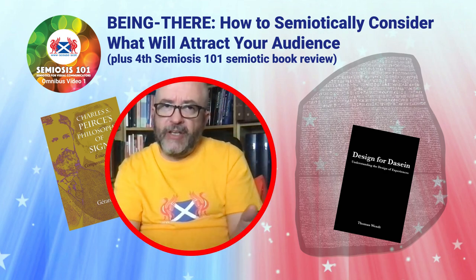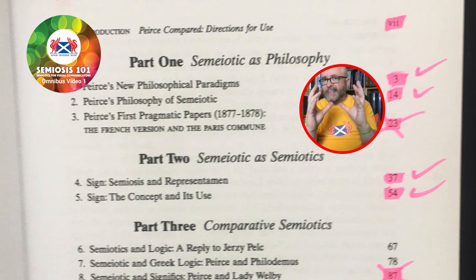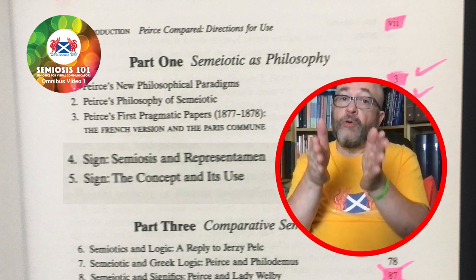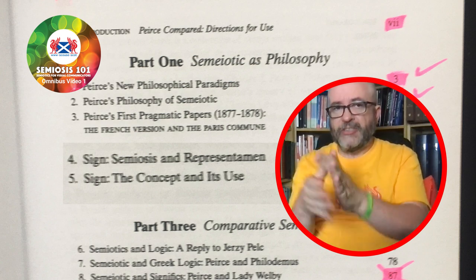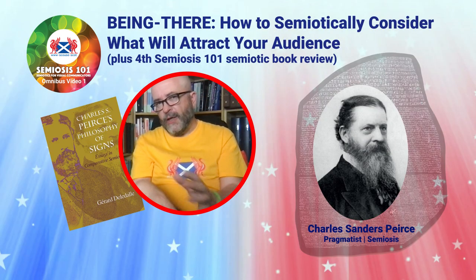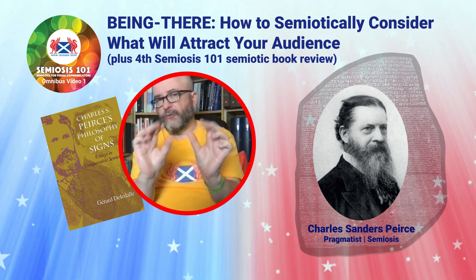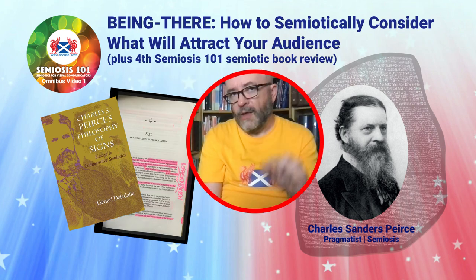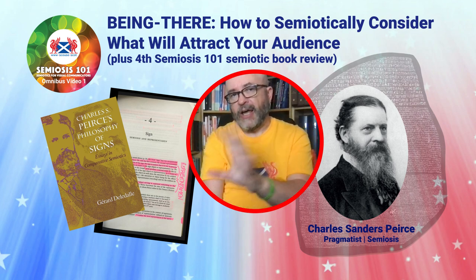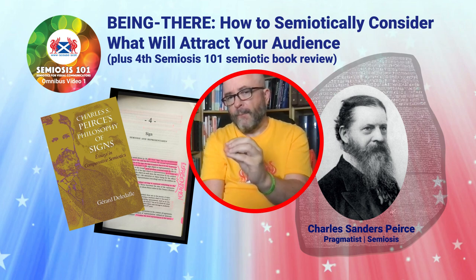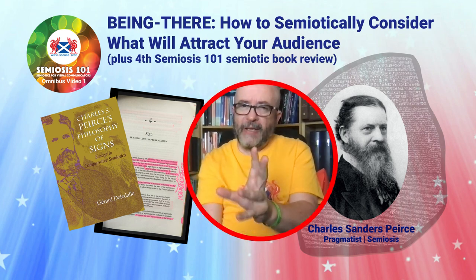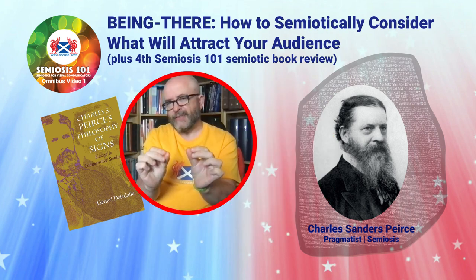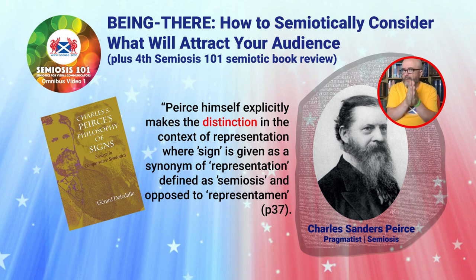This book is a very useful reader into Peirce's thinking on semiotics. Deledalle's essays stretch over 50 years of his erudition. Of all his essays, I found the first three parts of his book the most rewarding — especially Part Two's essays: Signs, Semiosis, and Representament, and Sign: The Concept at Its Use. Deledalle is a respected Peircean; it was essentially from him that I began to use representation from a visual communication context as a suitable designer-centric term for Peirce's representament. Deledalle makes a statement about Peirce and representation which appears to counter how I use the term.